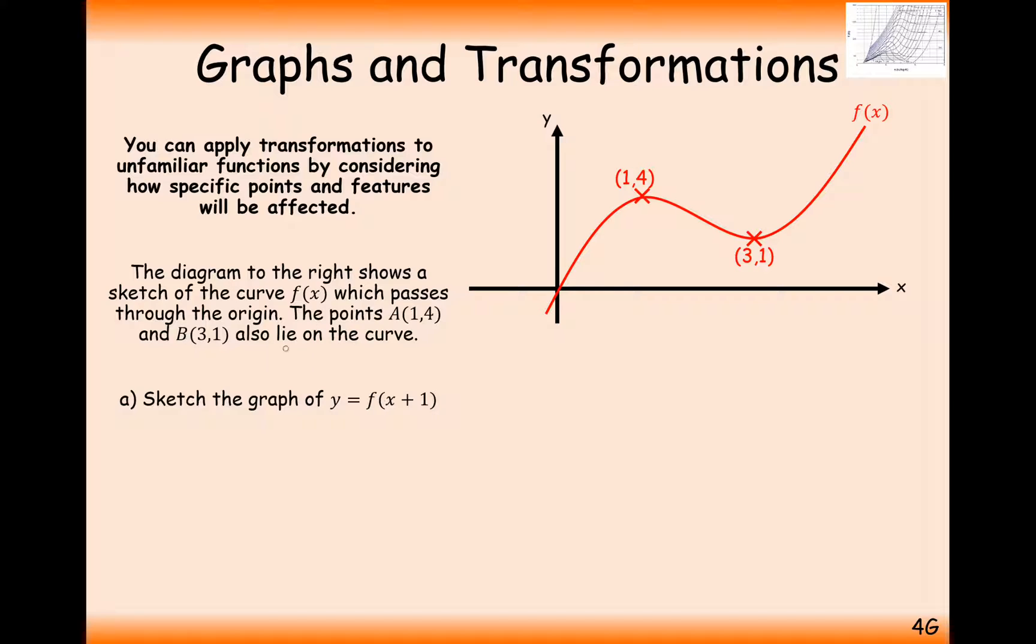Points A and B lie on the curve. Sketch the graph of f of x plus 1. Now hopefully you've watched the two videos before that look at translating graphs and stretching graphs. In this case here, inside the brackets represents horizontal movement.